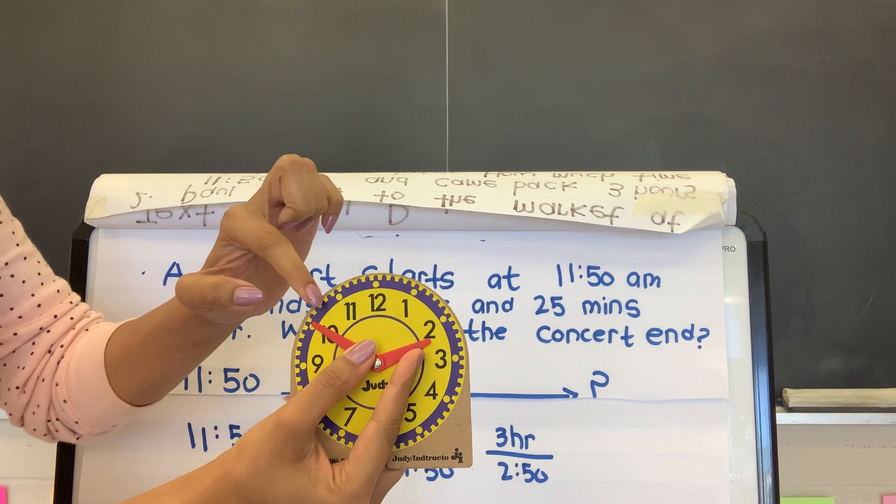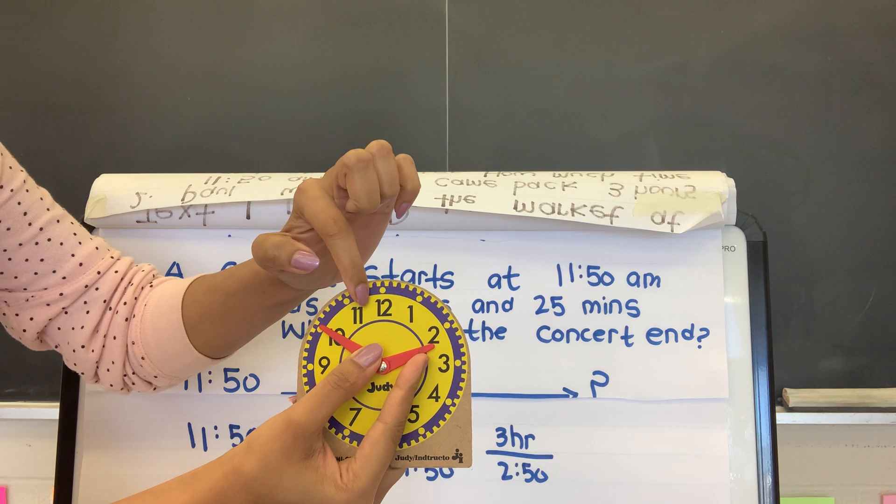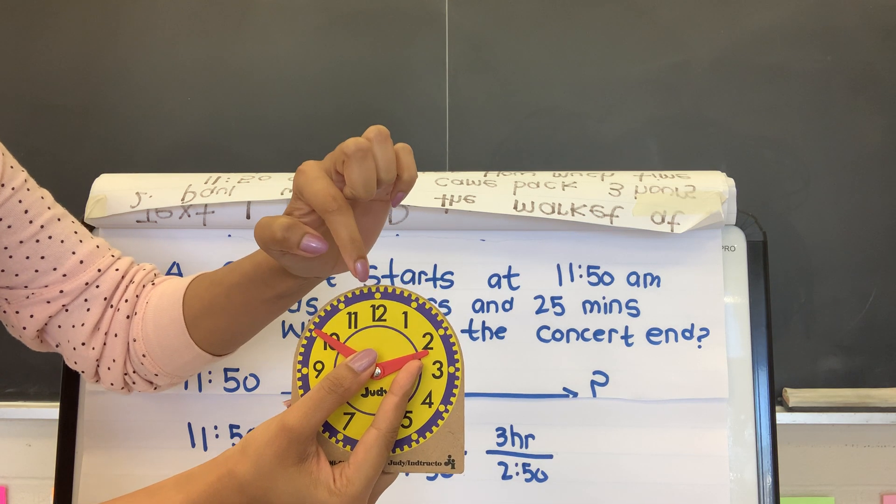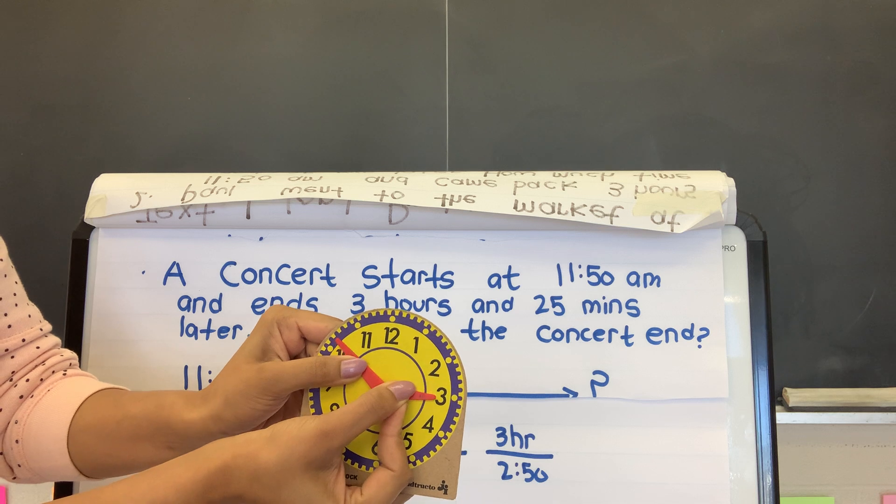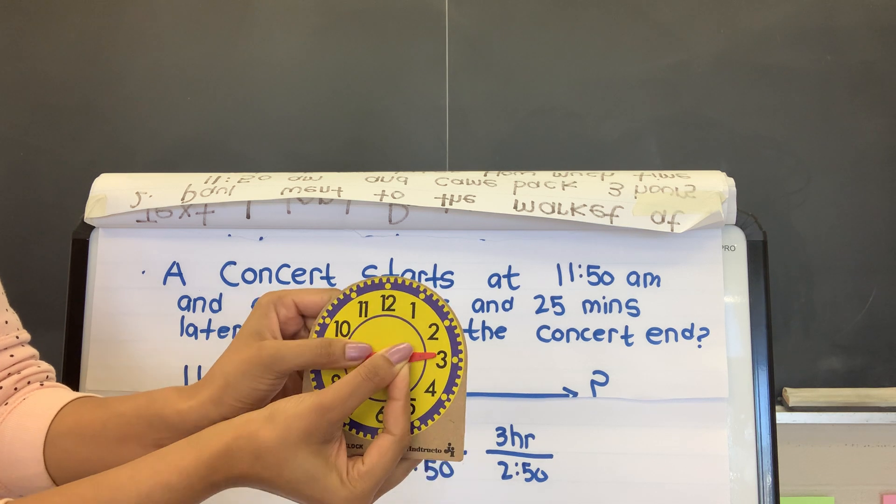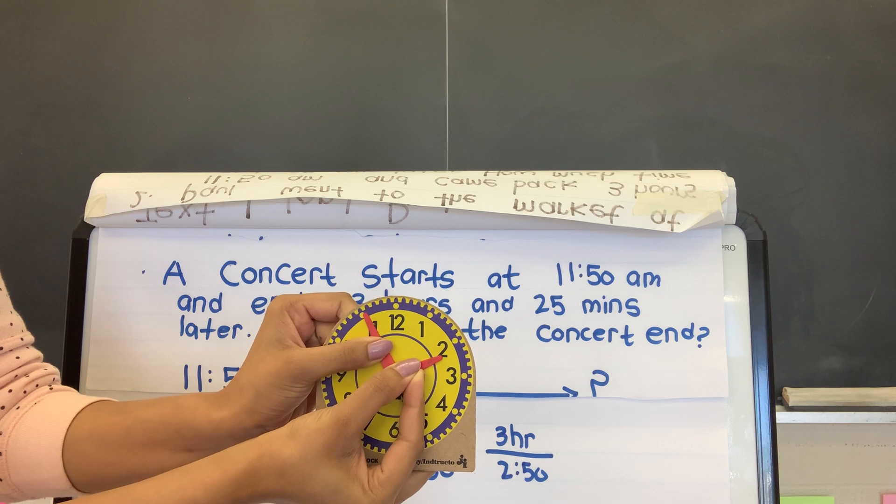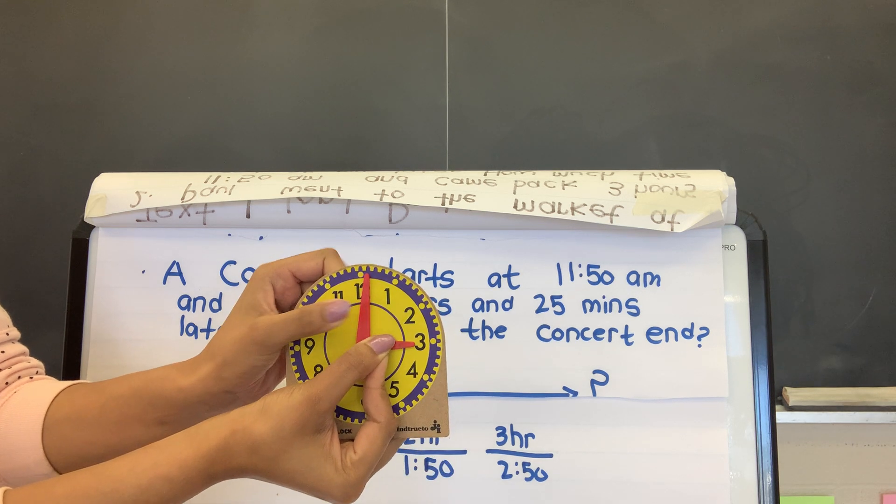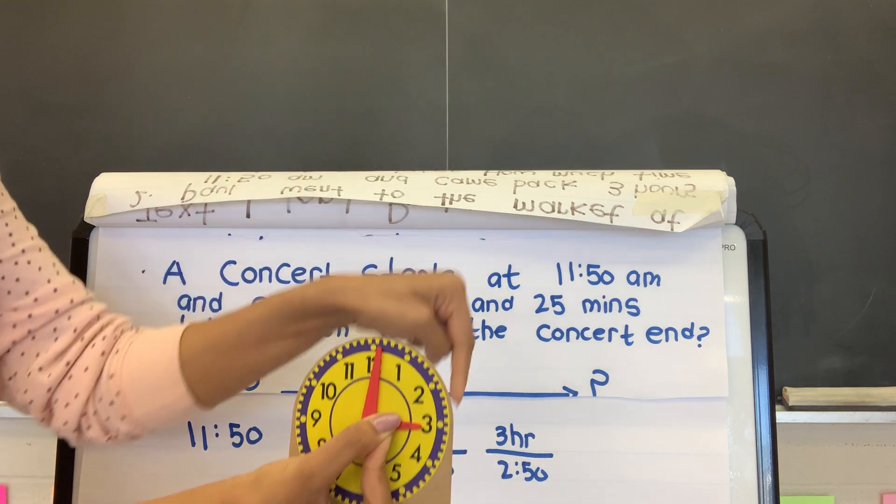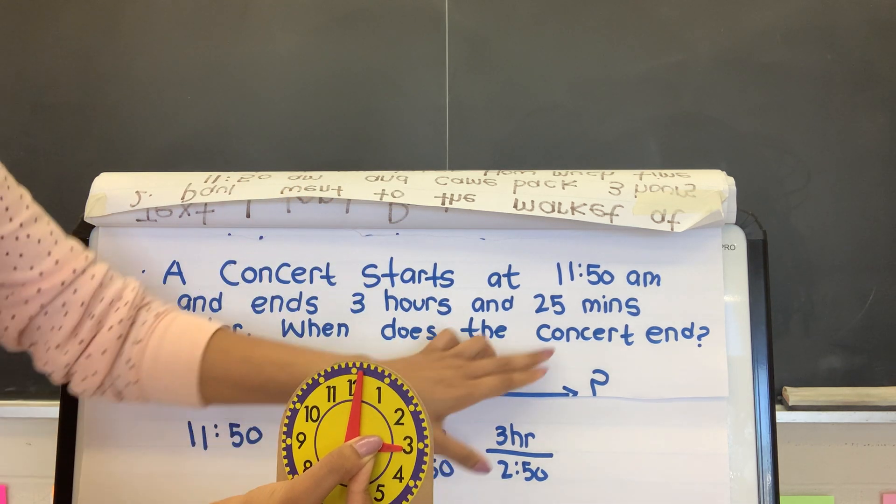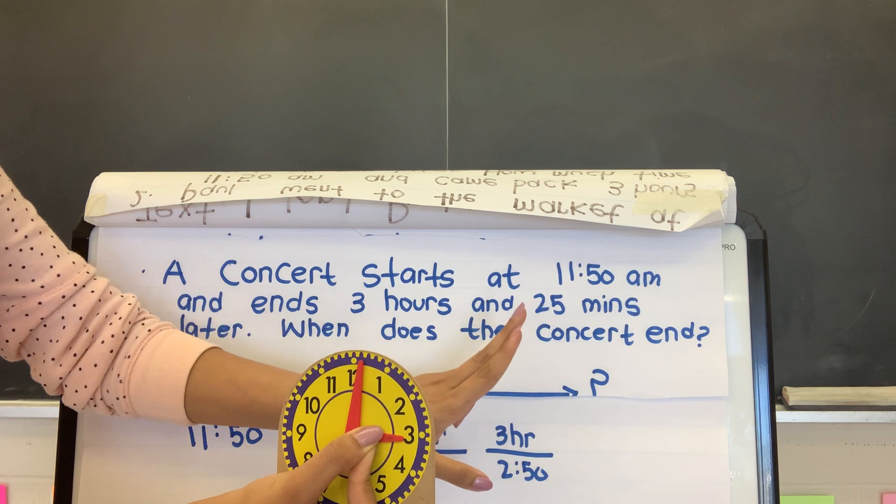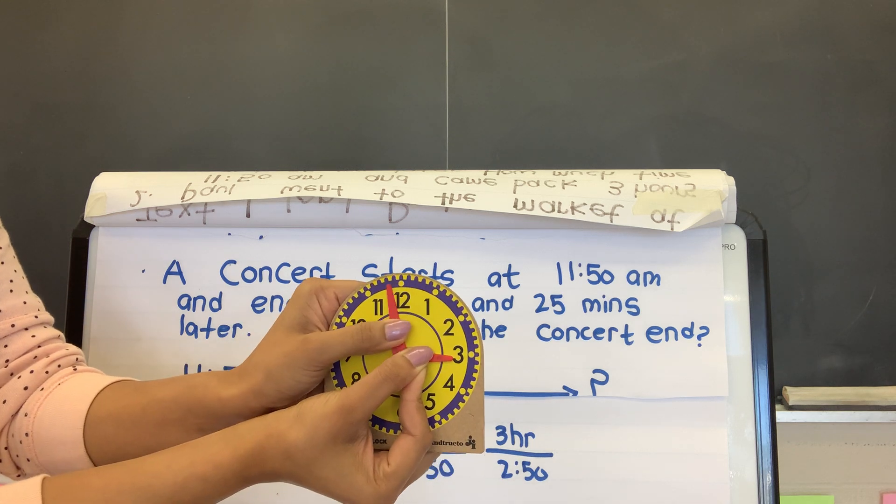Now we know that in about 10 minutes, it is going to be 3 o'clock, because it's 2:50, then 2:55, and 3 o'clock. So we need to remember that when we are counting up, because we have 25 more minutes left of the concert.